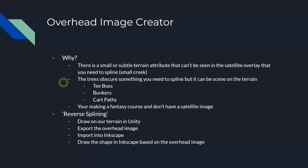I call it really reverse splining because that's essentially what it is — we're doing everything backwards. We're going to go into our terrain first, draw on that terrain, then export that drawing as a PNG imported into Inkscape. And that is essentially our new overlay image that we're going to be using to trace out our splines. So it's exactly opposite.